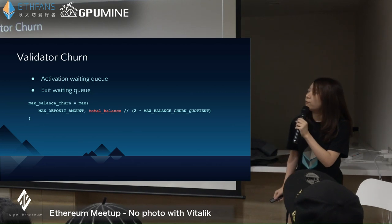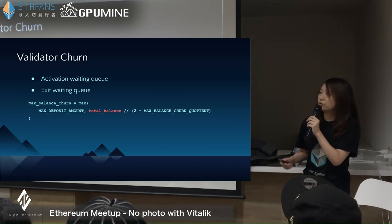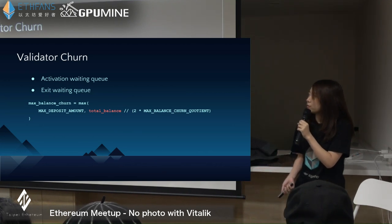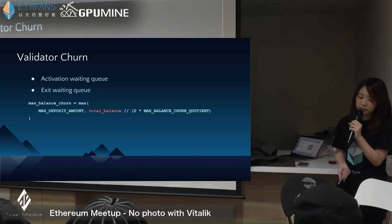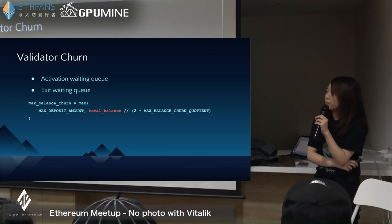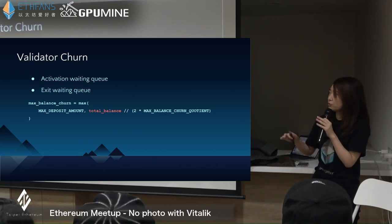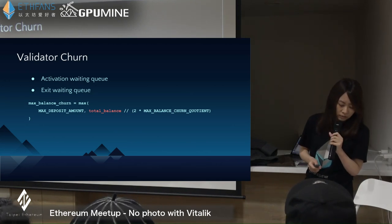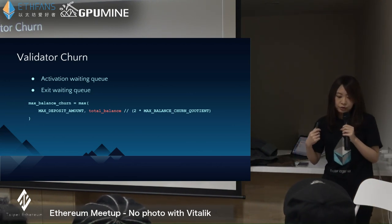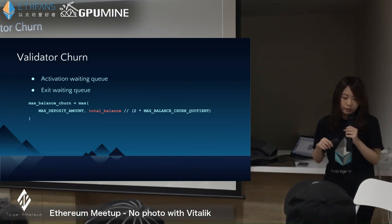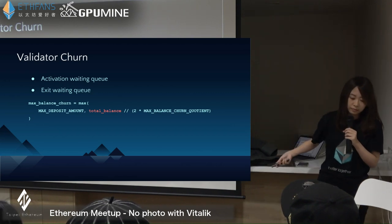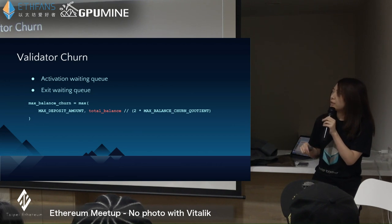A validator can't just join or leave the Beacon Chain immediately. There are two waiting queues: the activation queue and the exit queue. The reason for this is stability and chain liveness — we can't accept the validator list and committees changing too frequently. Each time a validator registry update happens, the number of validators that can be activated or deactivated is based on a formula derived from the total balance. Not every validator can leave as soon as they want.